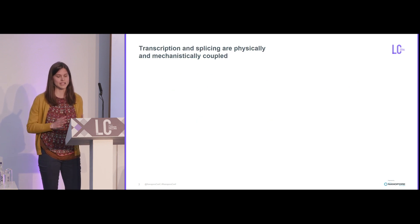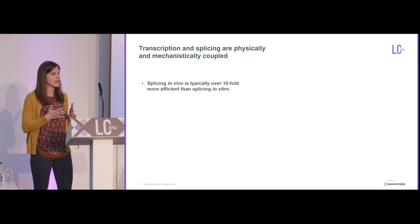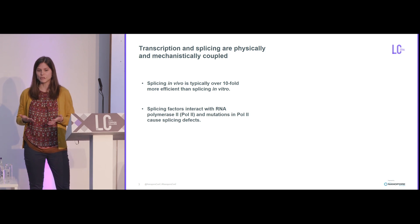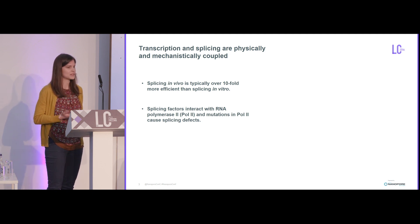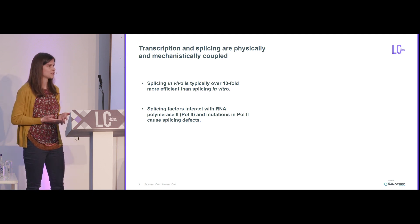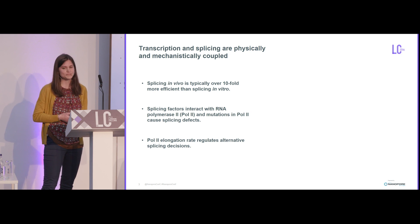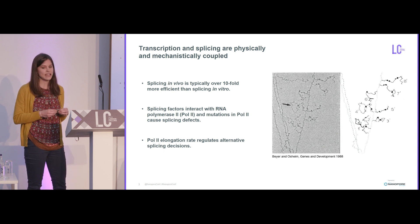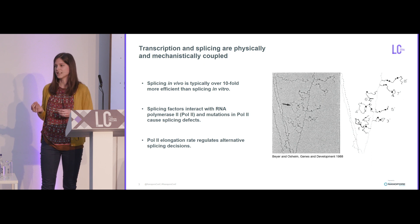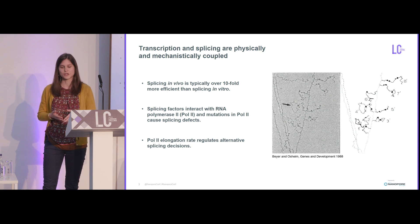A lot of what we know about splicing and the mechanism of how it works is from in vitro splicing assays, where researchers are studying splicing within a test tube. But we know that splicing in vivo is very different — in vivo, splicing happens about 10 times faster. We also know that splicing factors interact with the transcription machinery within cells, and that the transcription machinery, when mutated, can lead to severe splicing defects. The rate of transcription can also regulate alternative splicing decisions. So it's clear that these two are really coupled.